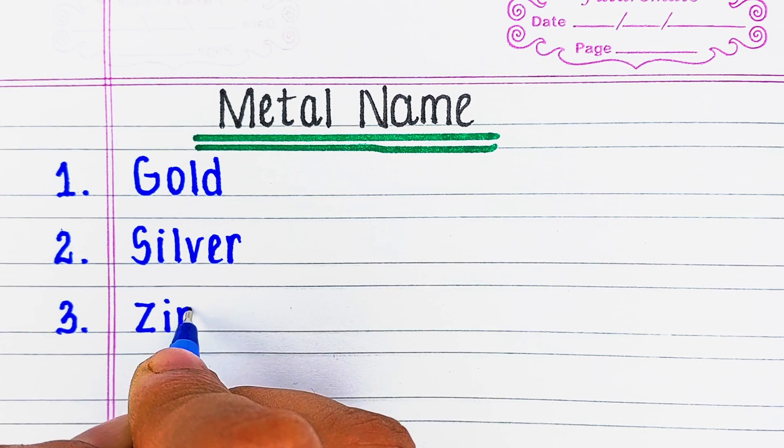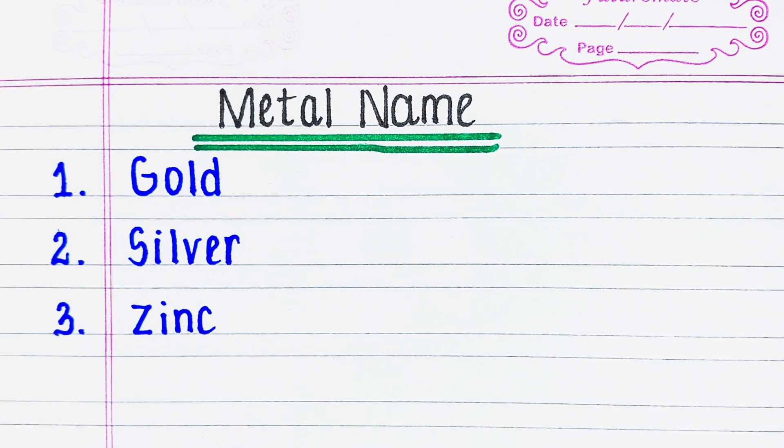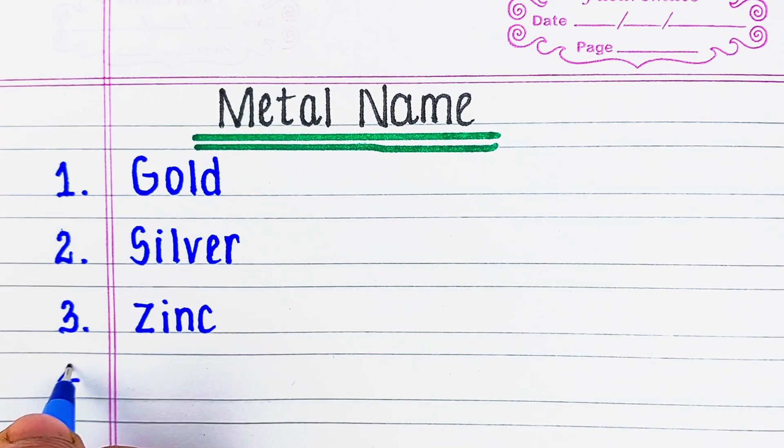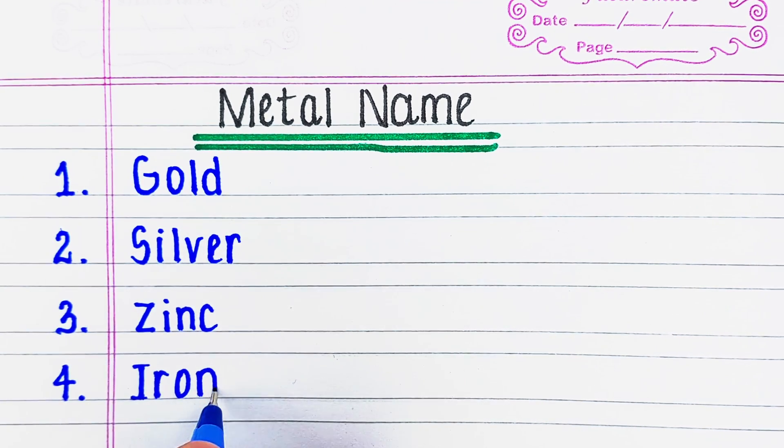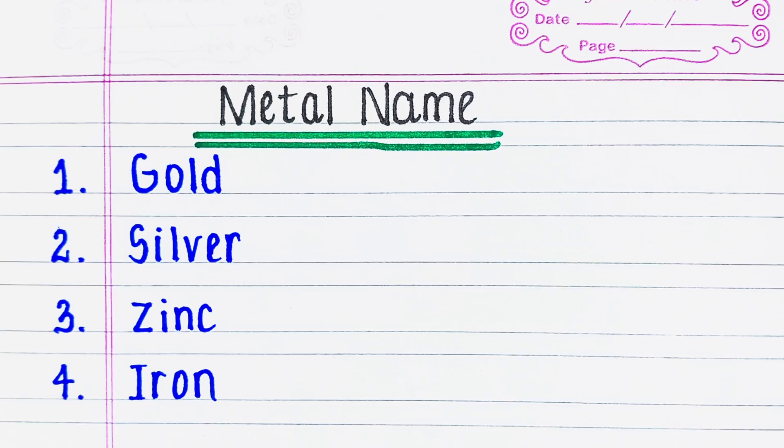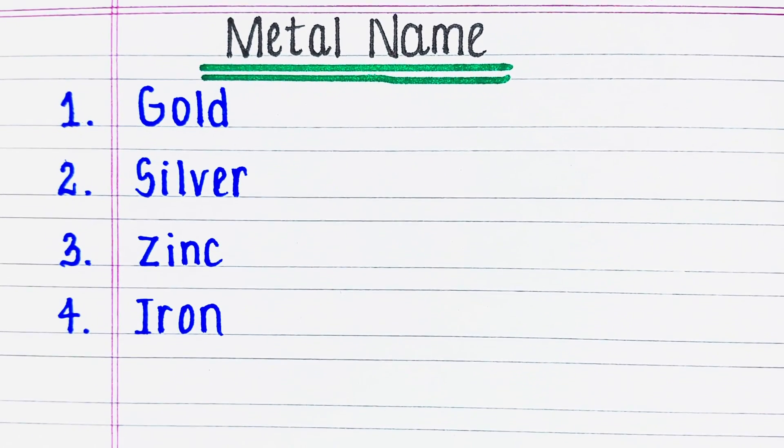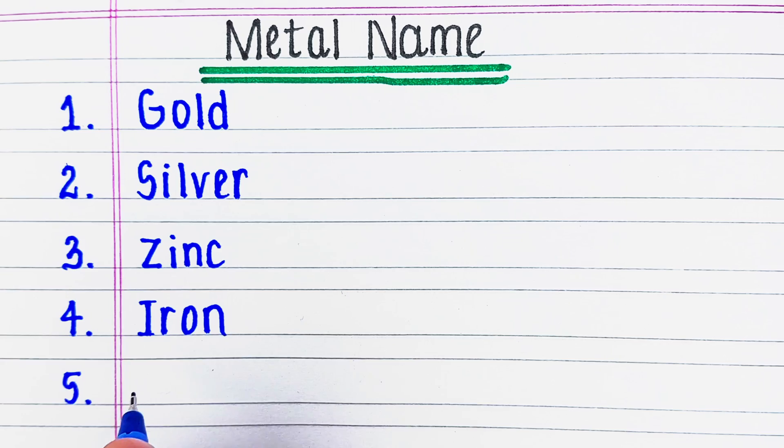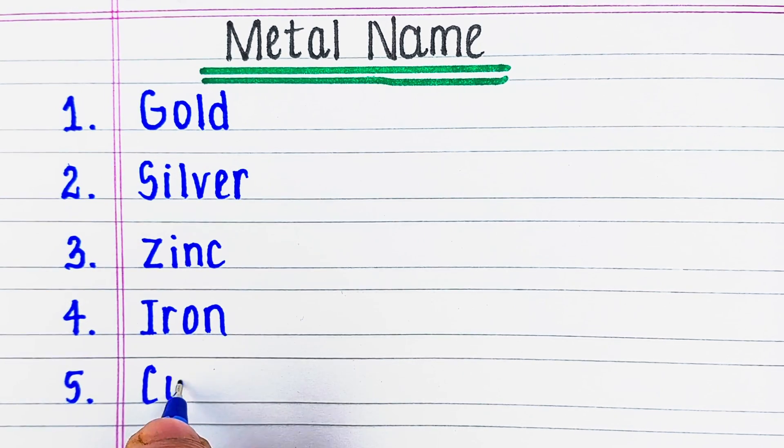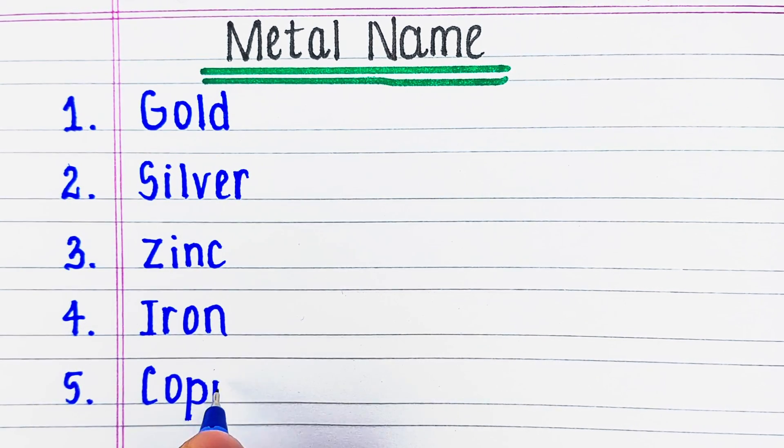First one is Gold. Next is S-I-L-V-E-R, silver. On number three, we have Z-I-N-C, zinc. Next metal is I-R-O-N, iron.